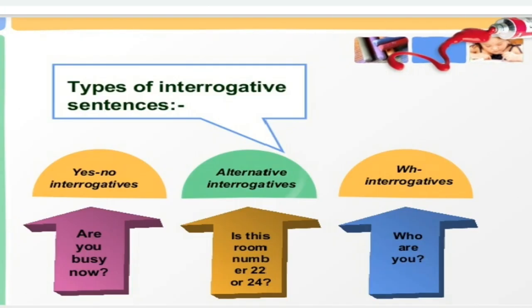There are the following types of interrogative sentences. The first type is yes/no interrogatives — for example: 'Are you busy now?' The second type is alternative interrogatives — for example: 'Is this room number 22 or 24?' — that means a choice. The third type is WH interrogatives, which are interrogative sentences starting with a question word: who, what, where, how, why, etc.